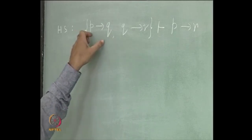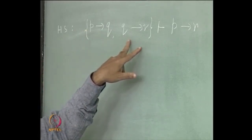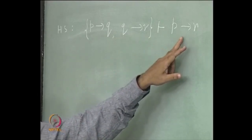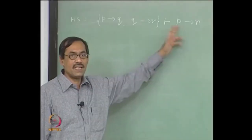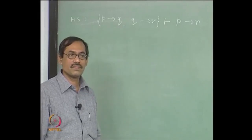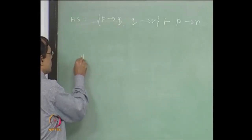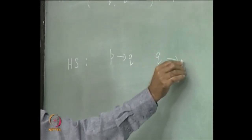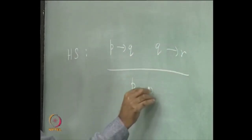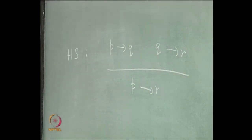In that case, if you have p implies q and q implies r, you can write it as an inference rule — hypothetical syllogism — which says: p implies q, q implies r, therefore you derive p implies r. So each consequence gives rise to such an inference rule, which we call derived inference rules, just like theorems are termed derived axioms. Consequences can similarly be called derived inference rules.